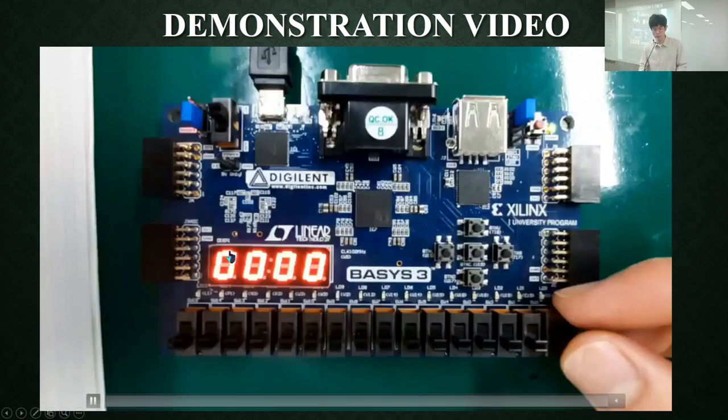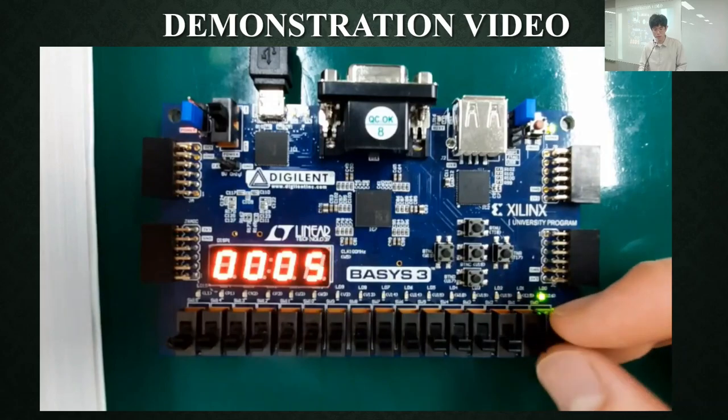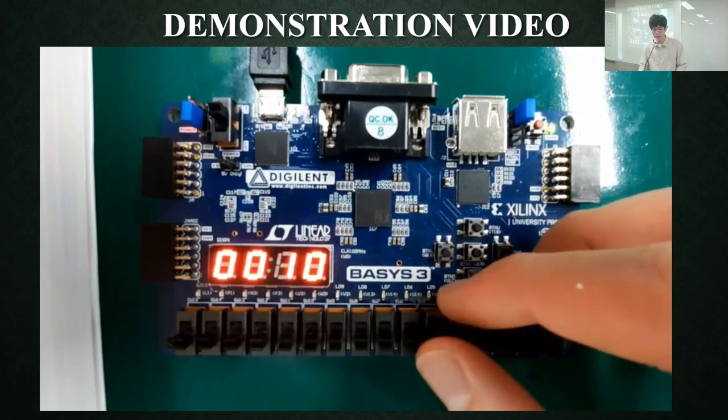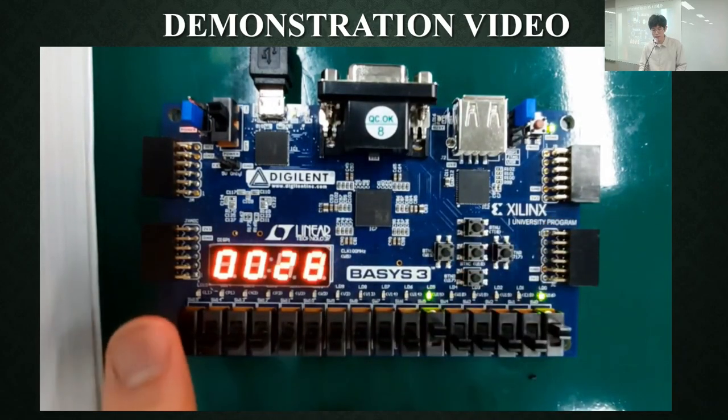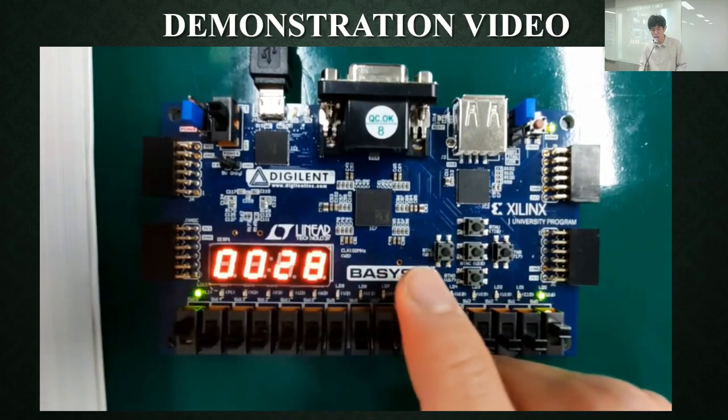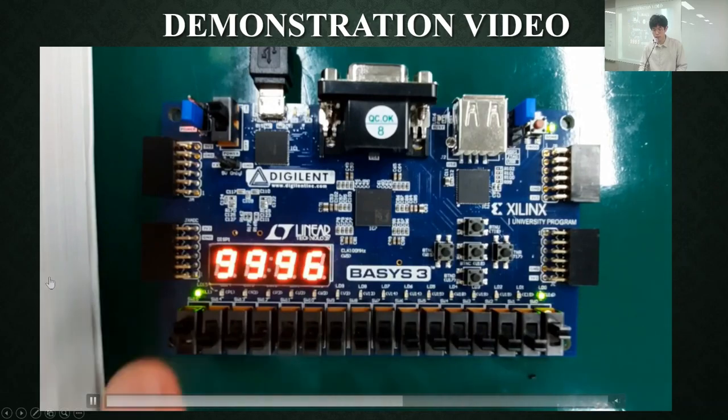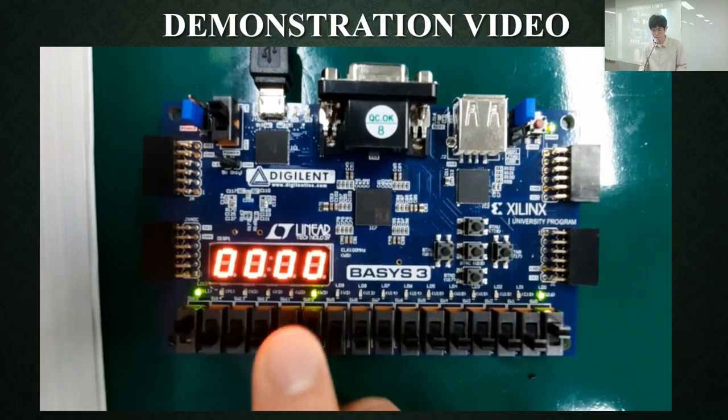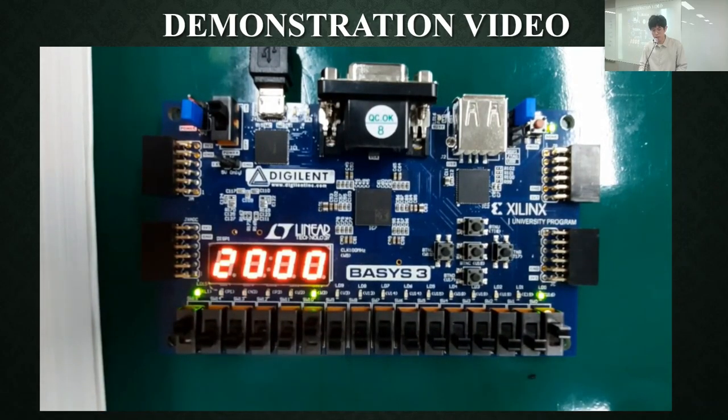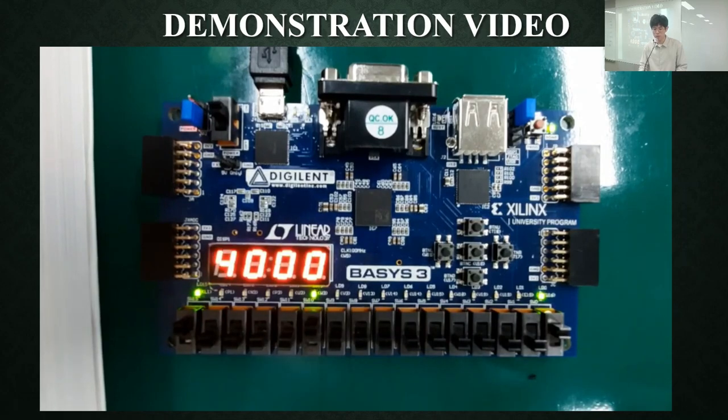This is the demonstration video. It counts, stop, count, and it counts quickly. And it also can downcount. When it reaches zero, it goes back to 9999. And it can jump by 1000. It can increase the number by 1000 if we enable the jump 1000 switch.